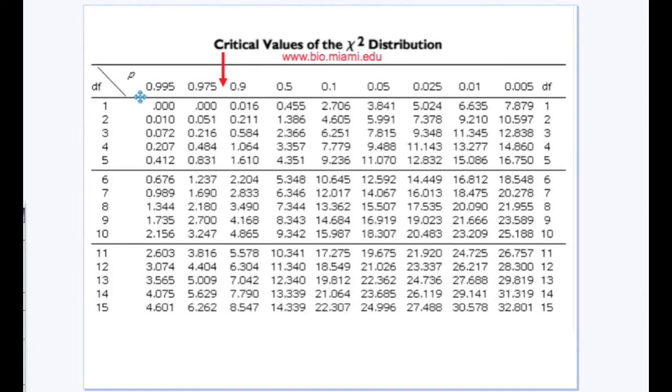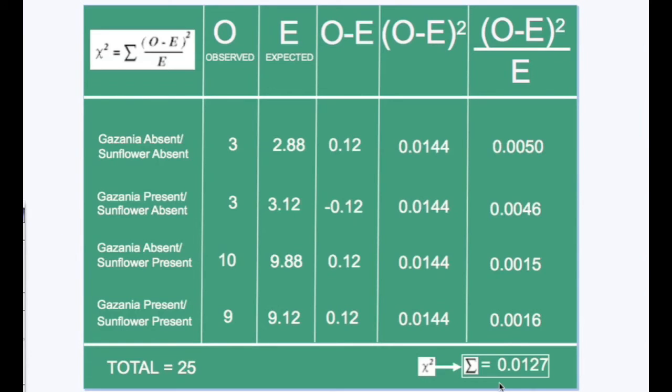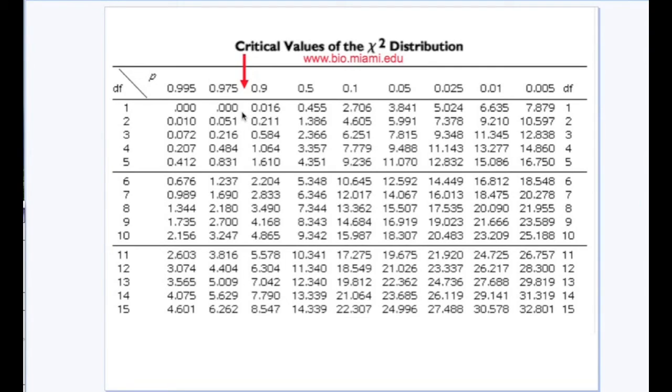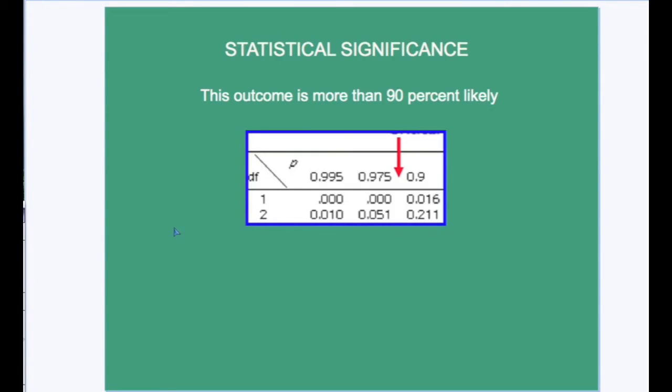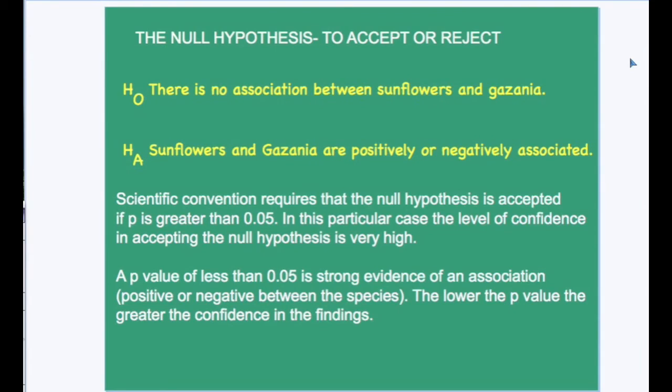Returning to the critical values for the chi-squared distribution and recalling that chi-squared is equal to 0.0127 and that the degree of freedom is one, we realize that even though this number 0.0127 is not present on the table, it should lie somewhere in this region, indicating that p, the probability, is greater than 0.9. Put another way, we can say that the outcome of this investigation is more than 90% likely with the p-value between 0.9 and 0.975. And what this means is that there is about a 95% chance of these results, and therefore there is no association between sunflowers and Gazania.